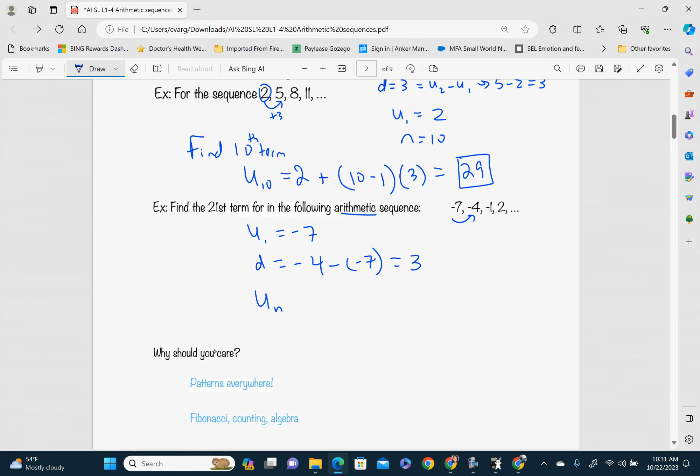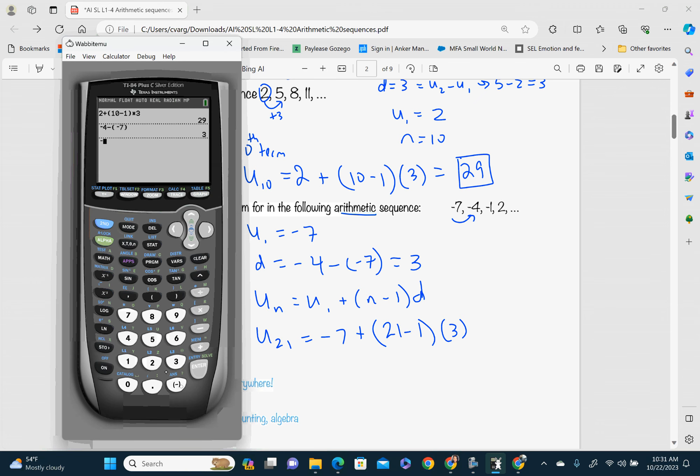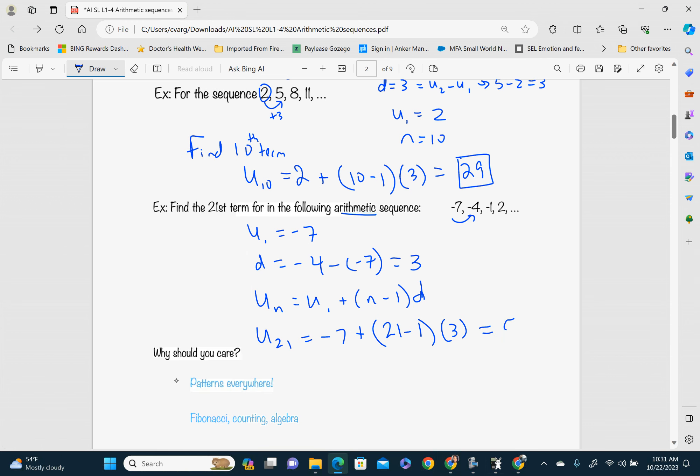So let's plug it into our formula. UN is equal to U1 plus parentheses N minus 1D. So our 21st term, U21 is equal to our U1, which is negative 7 plus N. They're asking us for the 21st term, so that's 21 minus 1 times our difference, which is 3. So all I'm doing right now is I'm plugging in things. And then you just go to your calculator and you type it in. So negative 7 plus parentheses 21 minus 1 times 3. Hit enter and you get 53. So that means that our 21st term is 53.